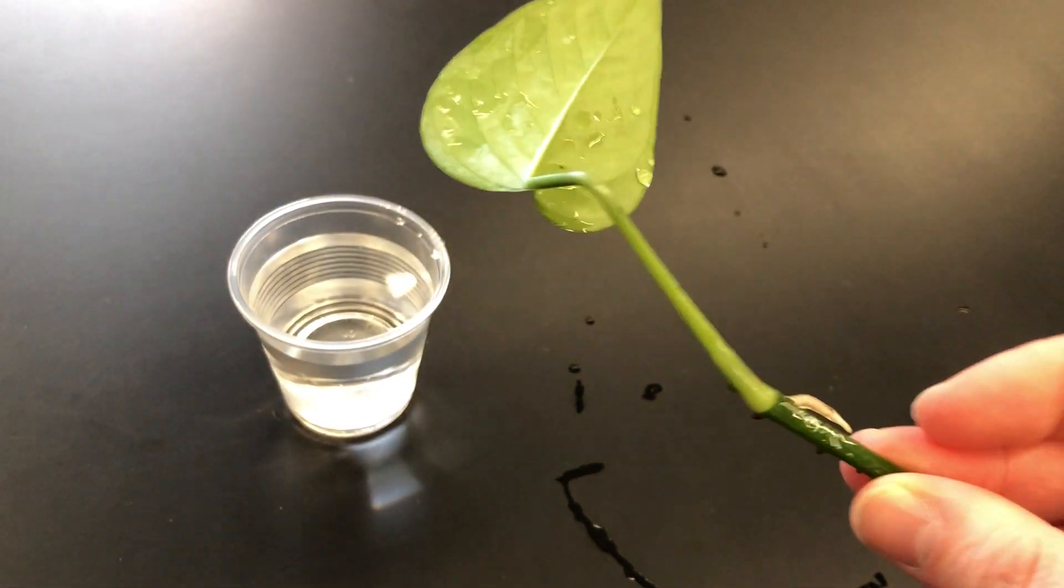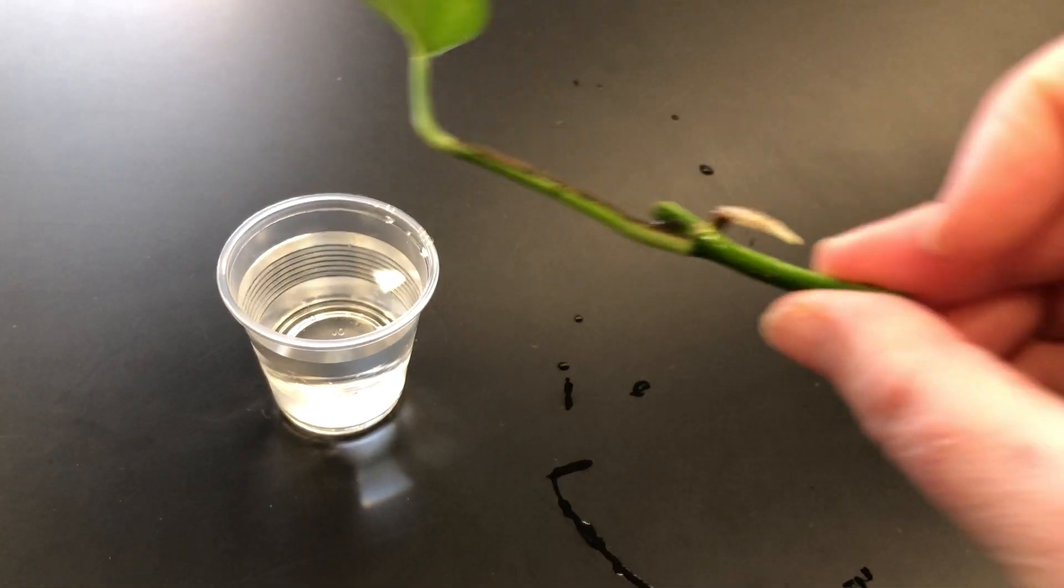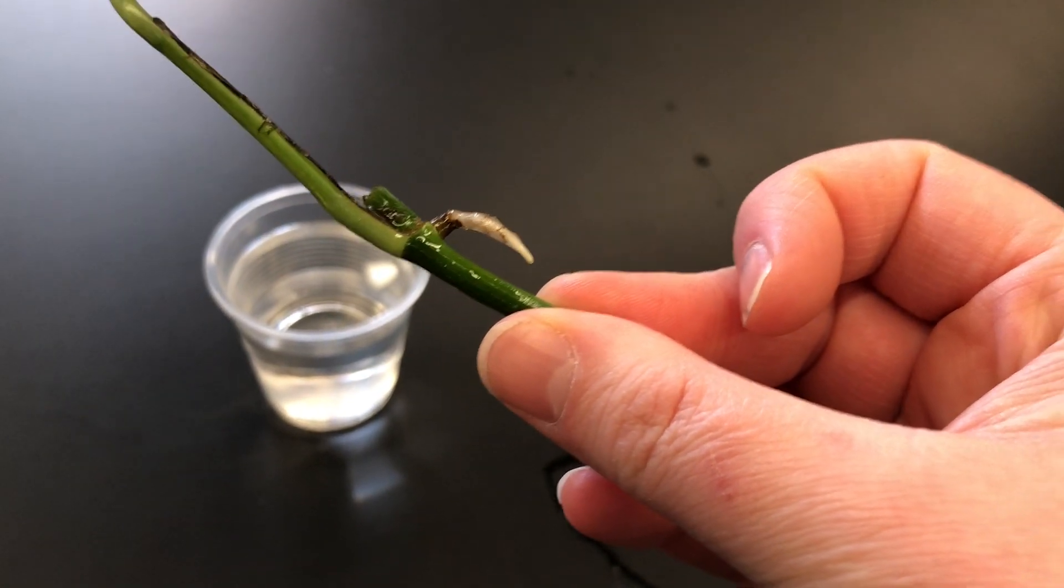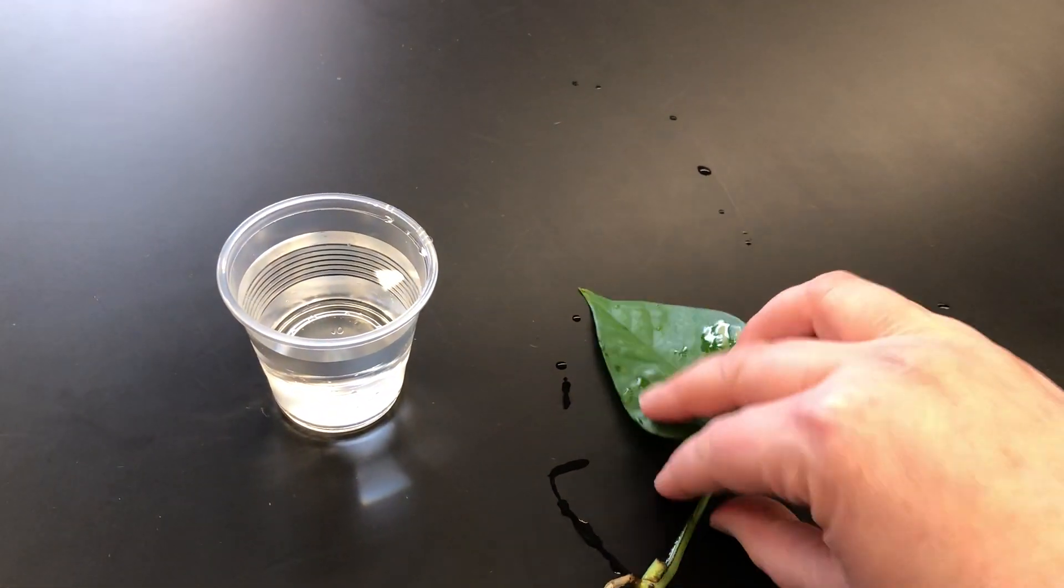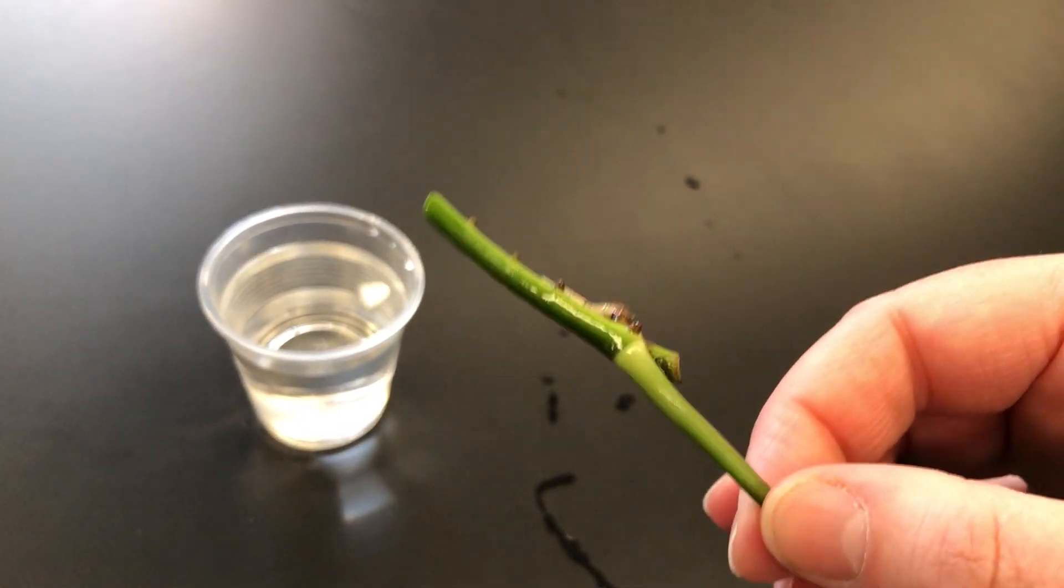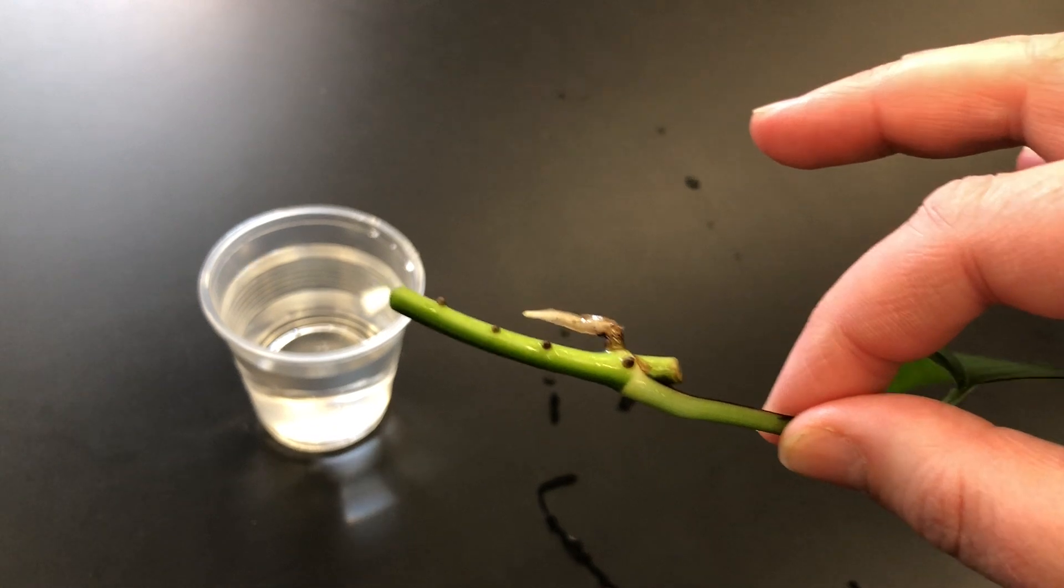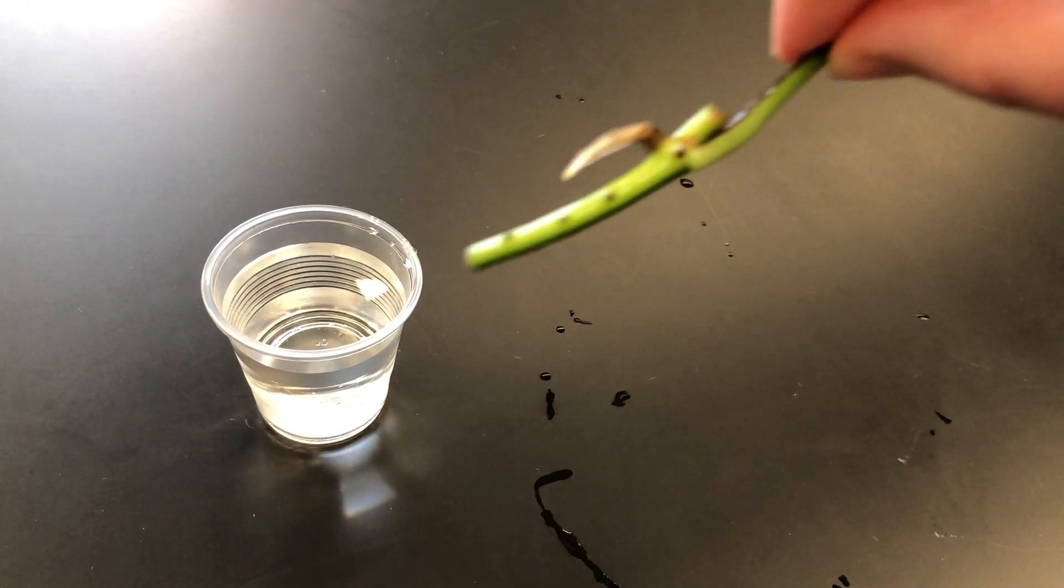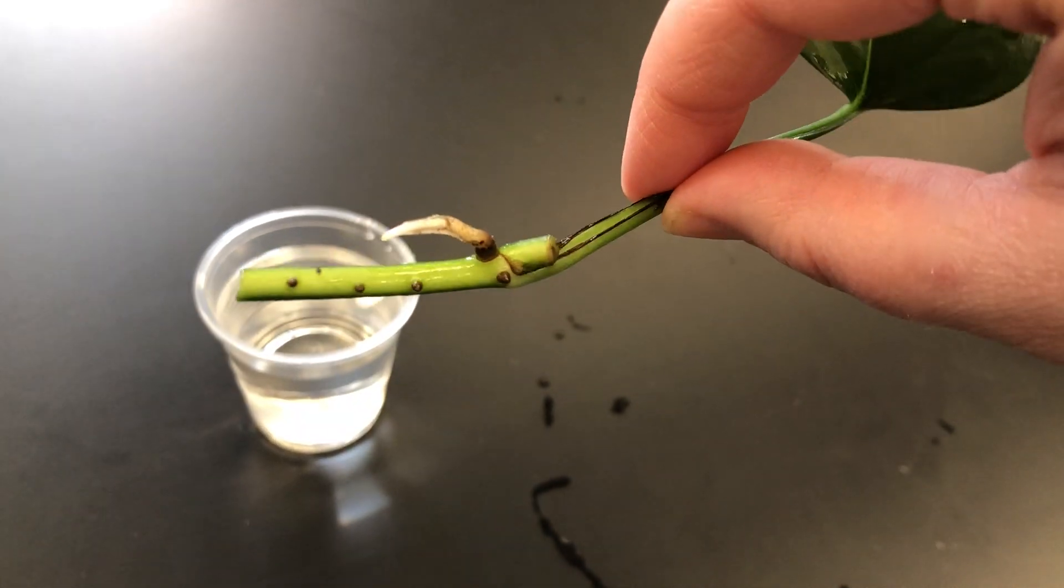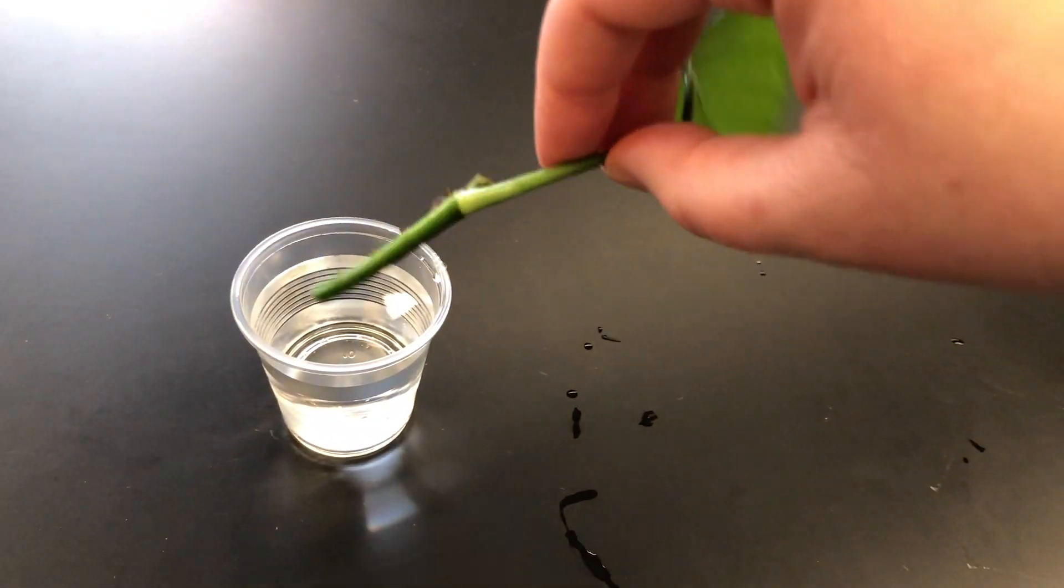If you look here, we have a little root growing. It grows out of a node. There are actually other nodes on this stem as well. A node is basically any juncture on a plant where something can grow. Where the leaf is growing out is also considered a node. That's a nice little root ready to go. We just want to make sure that root stays below the water line.